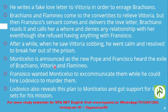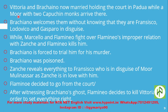Vittoria and Brachiano are now married and holding court in Padua. A Moor and two Capuchin monks arrive — these are actually the murderers in disguise. The Moor is Francisco in disguise, and the two Capuchin monks are Lodovico and Gasparo. Brachiano welcomes them without knowing their true identities.